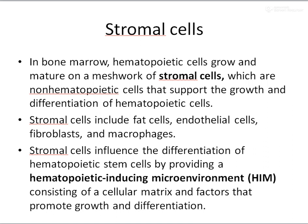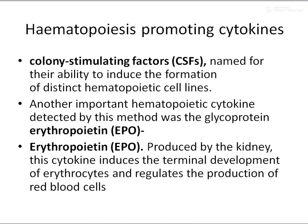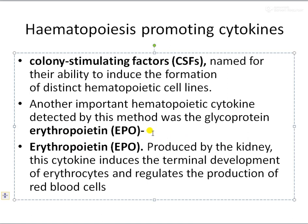The stromal cells mainly provide a hematopoietic-inducing microenvironment so that hematopoietic stem cells can grow and differentiate into different types of cells. Certain cytokines are also needed, such as colony-stimulating factors or cytokine proteins like erythropoietin, which is mainly produced by the kidney and induces the terminal development of erythrocytes, regulating the production of RBC.